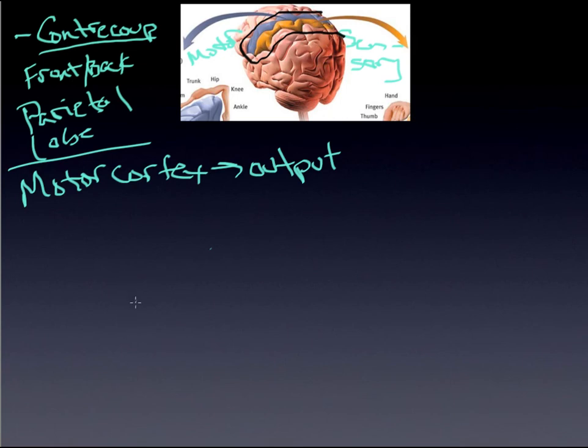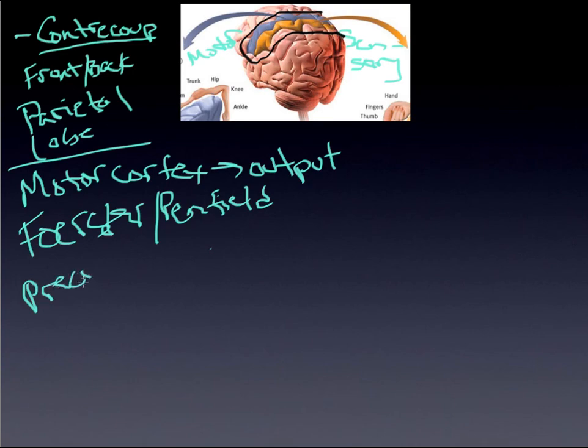Two researchers by the name of Forrester and Penfield actually mapped various areas of the brain that were related to the motor cortex, and they discovered that where precise control was needed - and this is something we will see throughout - where precise control leads to greater cortical area.